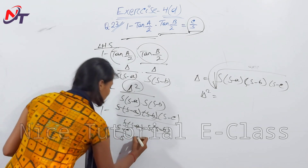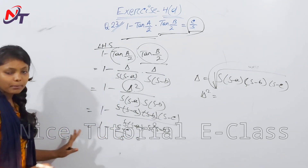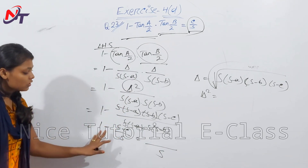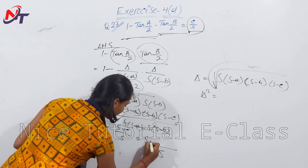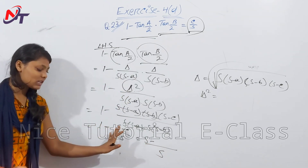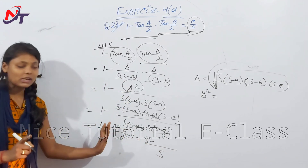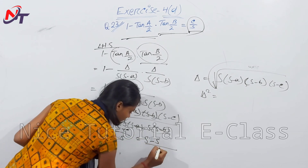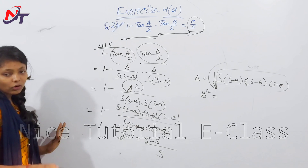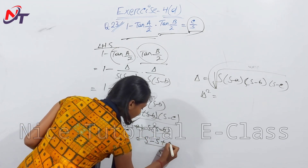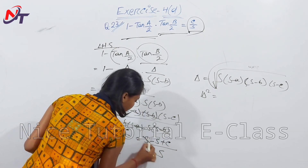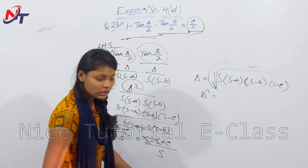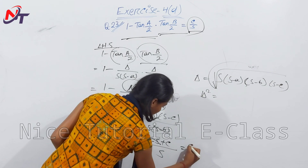Simple subtraction: taking LCM as s, we get s·1 minus (s-c) over s. Then s minus s plus c over s. The s terms cancel leaving c/s.